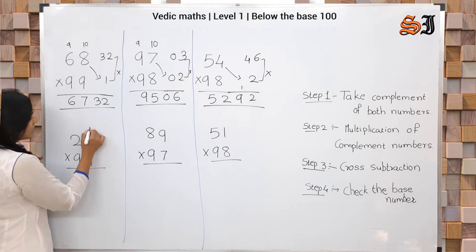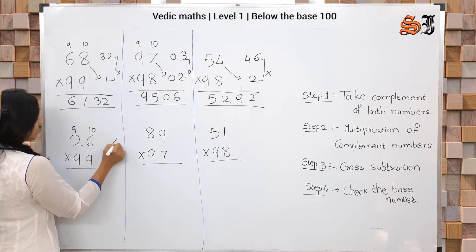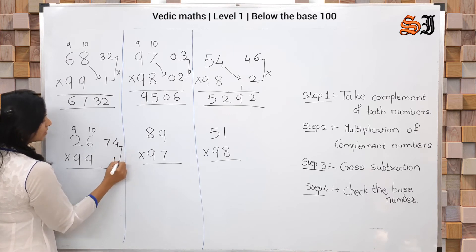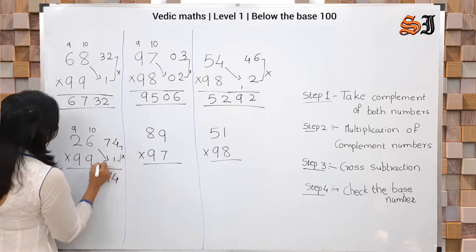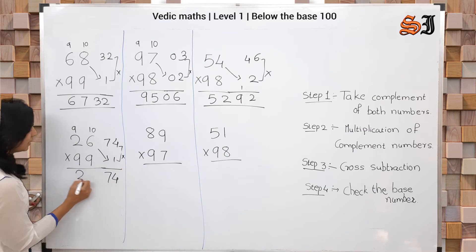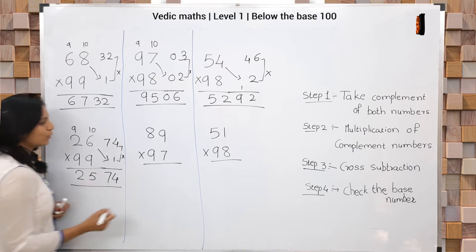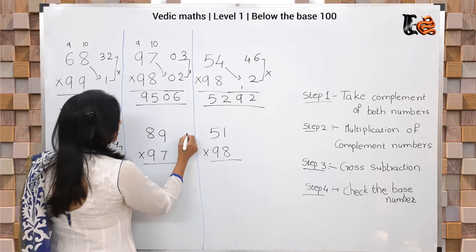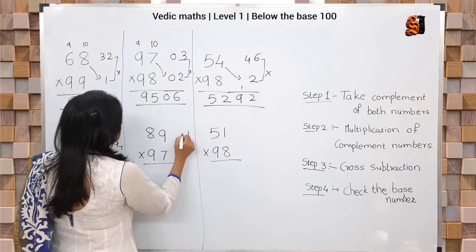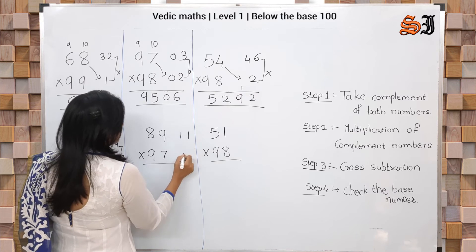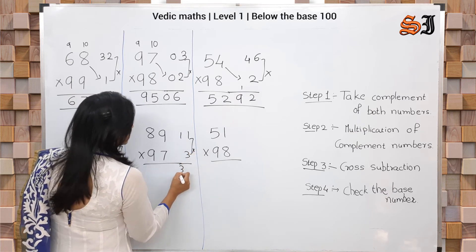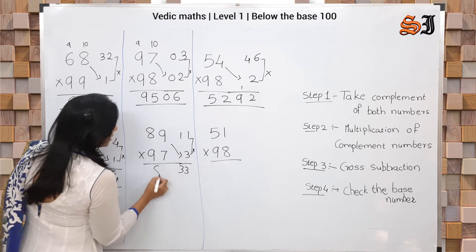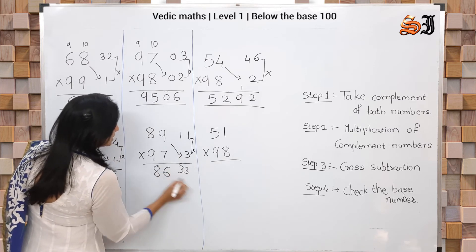Next number: 10 minus 6 = 4, then we have 7 and 1. Multiply compliments: 7 × 4 = 28, and cross subtraction gives the answer 2574. Then: 10 minus 9 = 1, and we have 1 and 3. Multiply: 1 × 3 = 3, and 3 × 3 = 9 — cross subtract to get the answer 86.